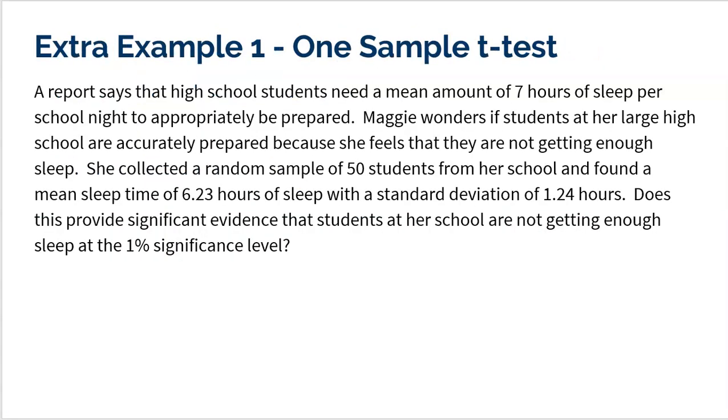All right, so here is the first extra example we're going to take a look at. A report says that high school students need a mean amount of seven hours of sleep per school night to appropriately be prepared. Now, Maggie wonders if students at her large high school are accurately prepared because she feels they're not getting enough sleep. She collected a random sample of 50 students from her high school and found a mean sleep time of 6.23 hours with a standard deviation of 1.25 hours.